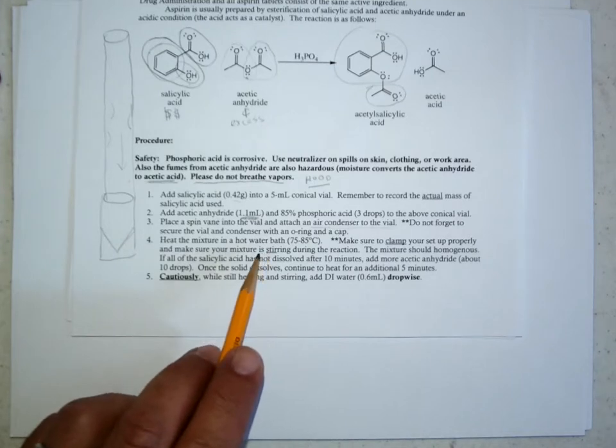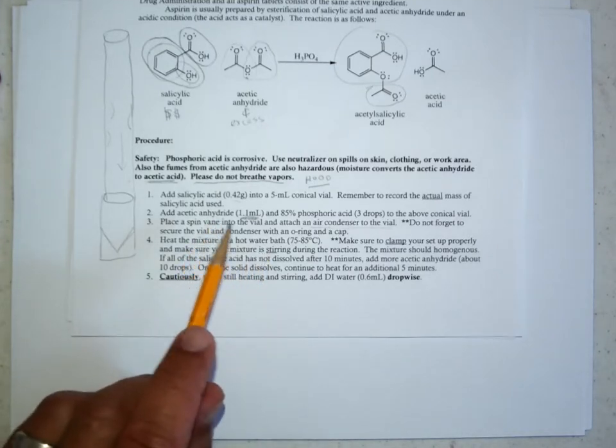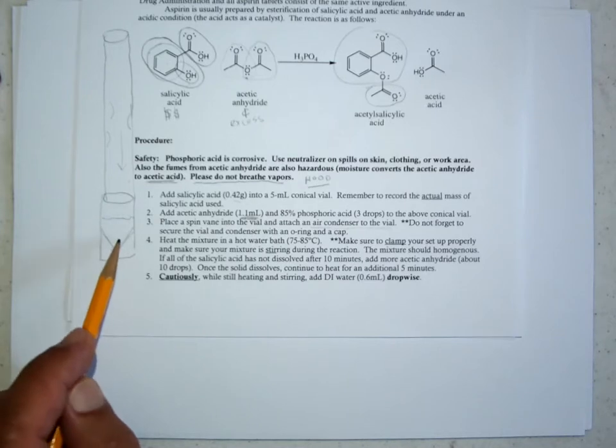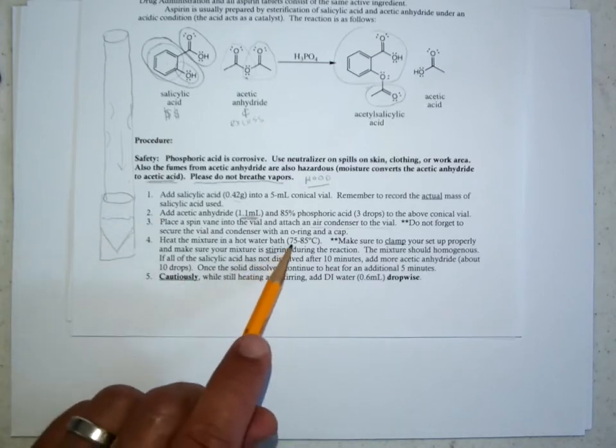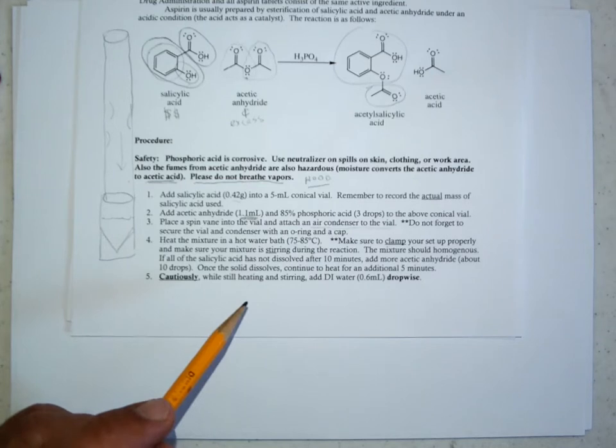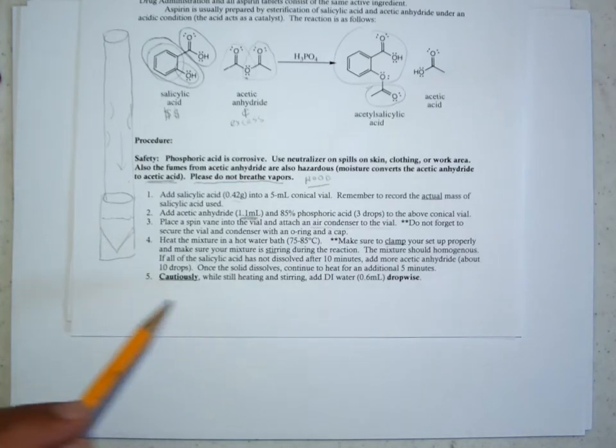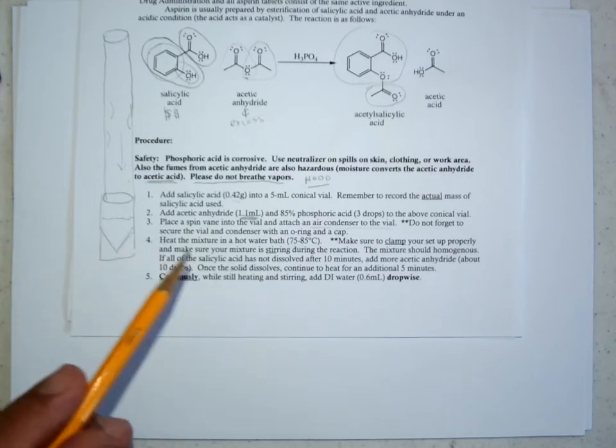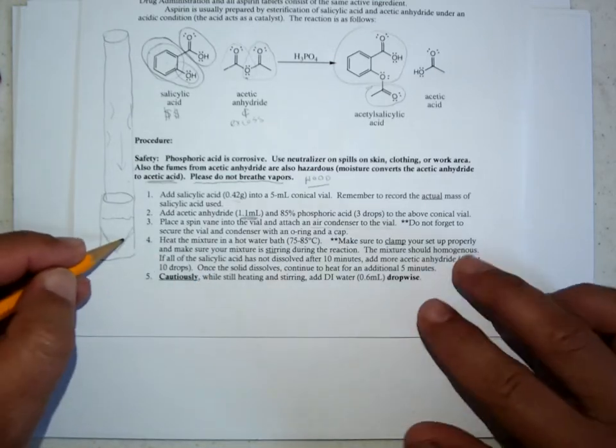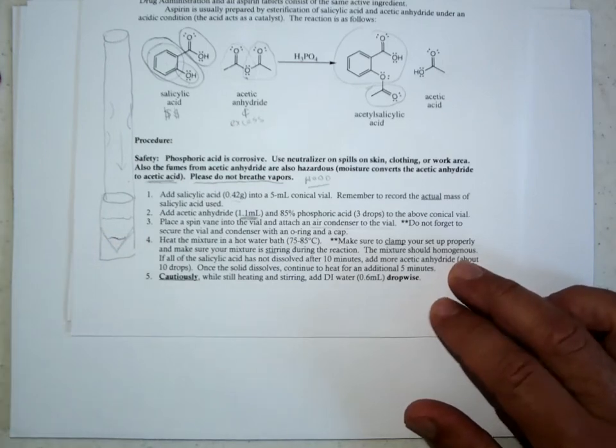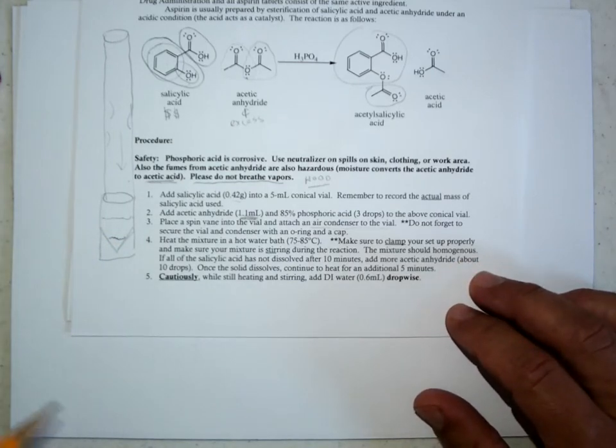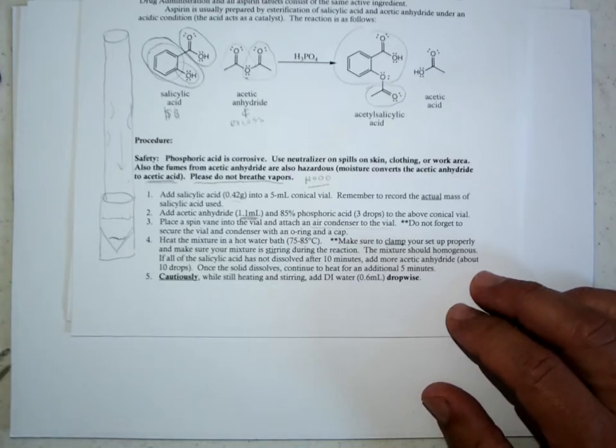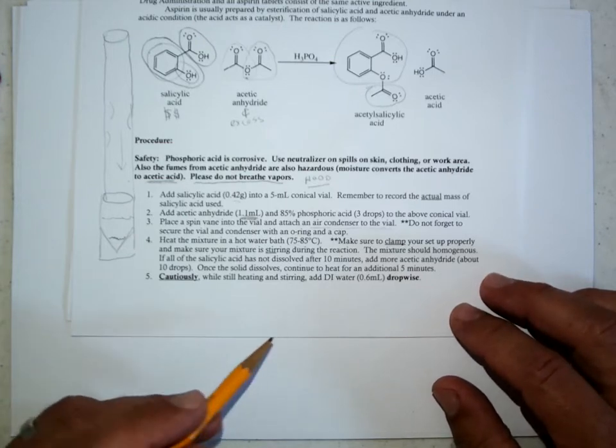We heat the mixture in a hot bath. So you basically have just the three ingredients. You'll put them in the conical vial, and then in a hot bath, between 75 and 85 degrees Celsius, if this is stirring during the reaction, it will become homogeneous. So initially, the salicylic acid is not very soluble. There'll be the solid salicylic acid in there, but during the course of the reaction, this will dissolve as it reacts. And if it doesn't all dissolve, you just throw a little more acetic anhydride in to make sure the reaction is complete.